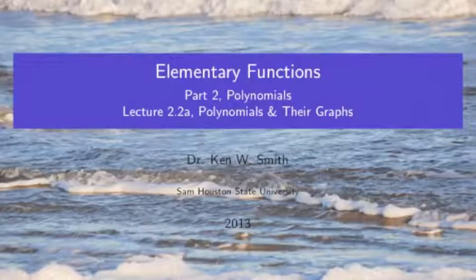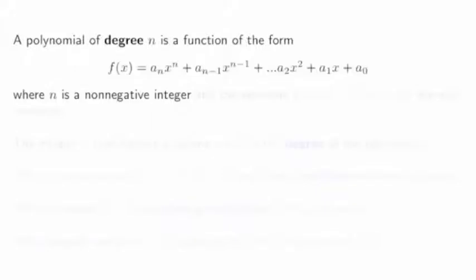In this lecture, we look at general polynomials and their graphs. A polynomial of degree n is a function of the form f(x) = a_n times x to the n, plus a_{n-1} times x to the n minus 1, plus and so on, with various coefficients a_i times x to the i.